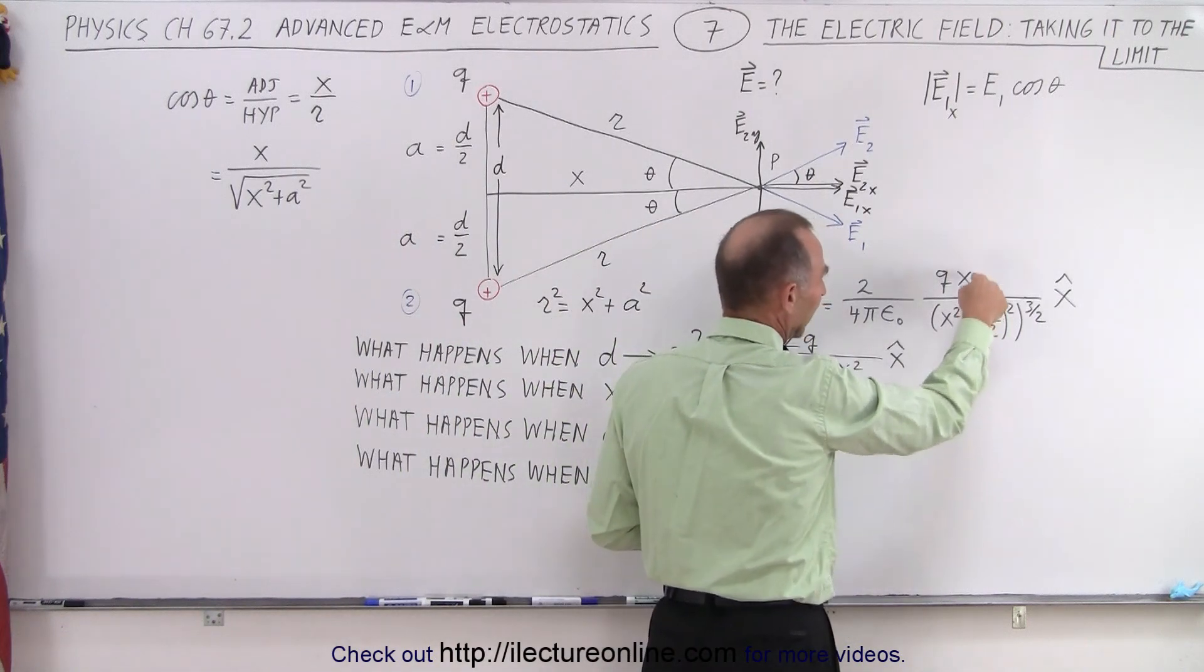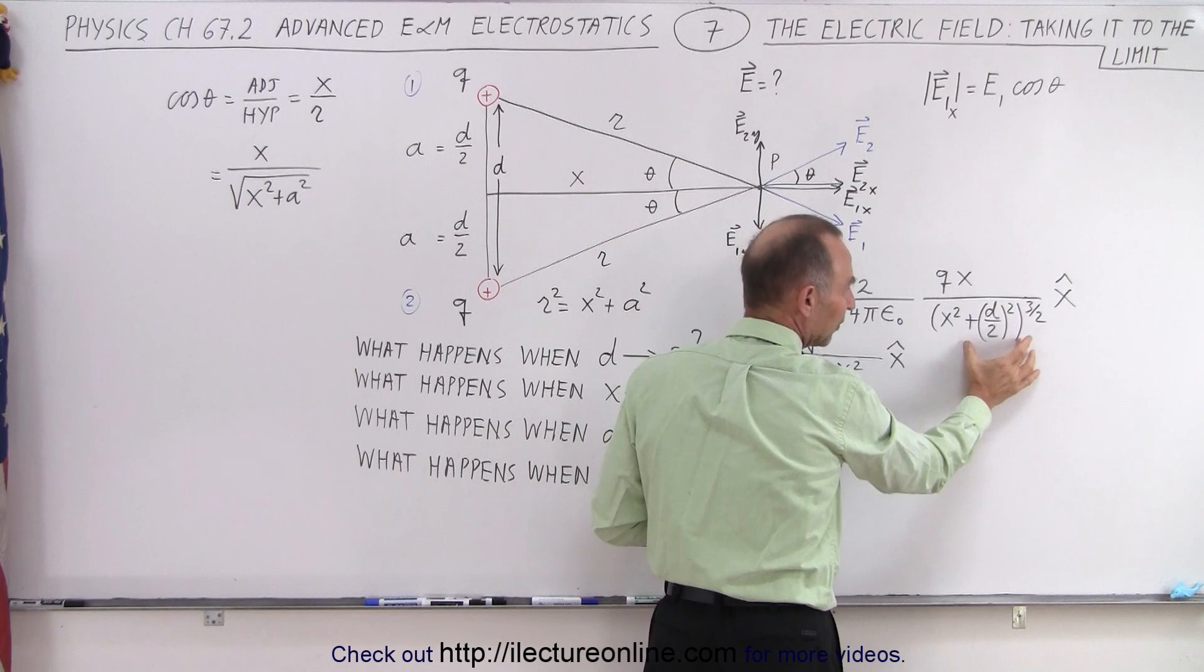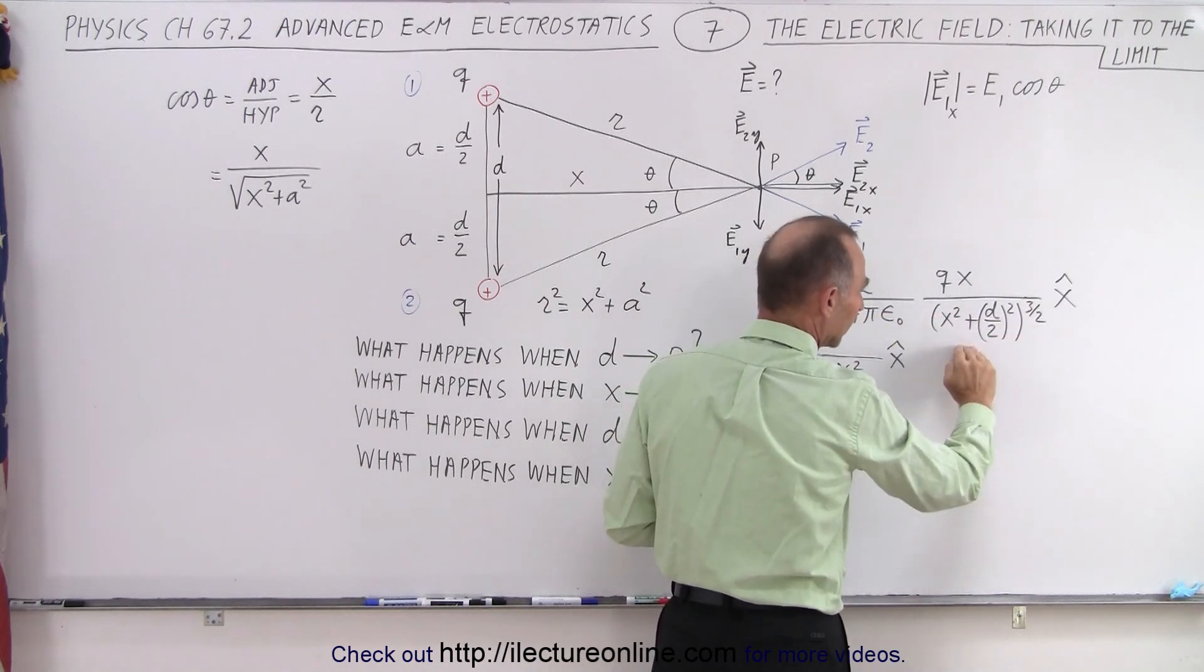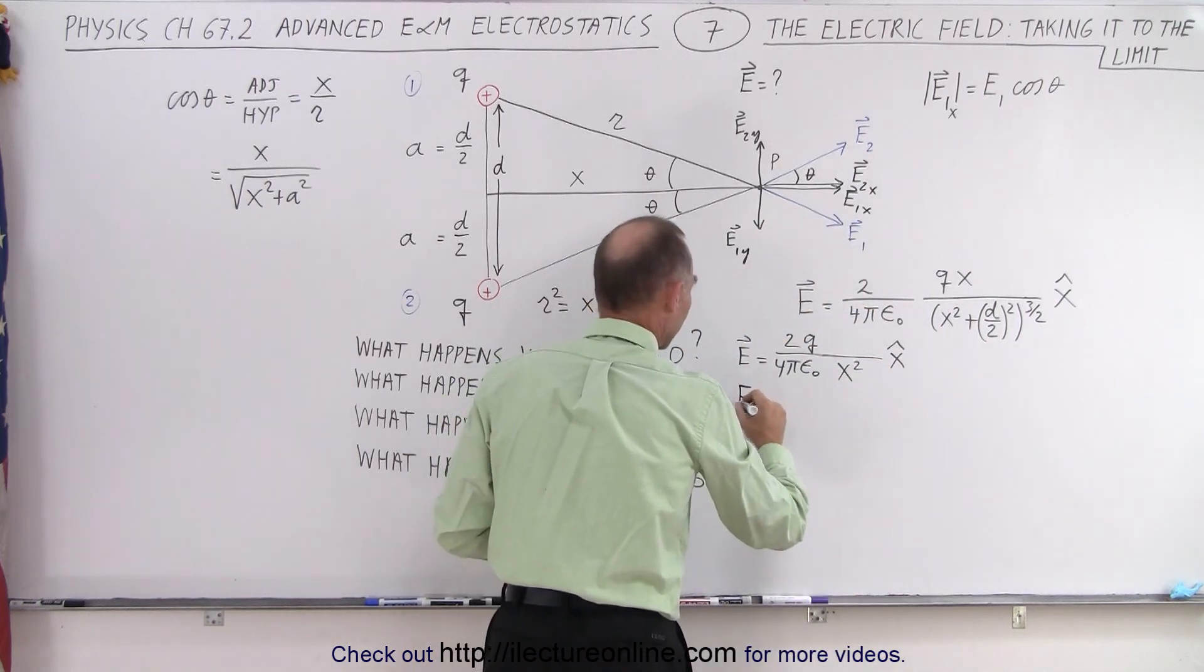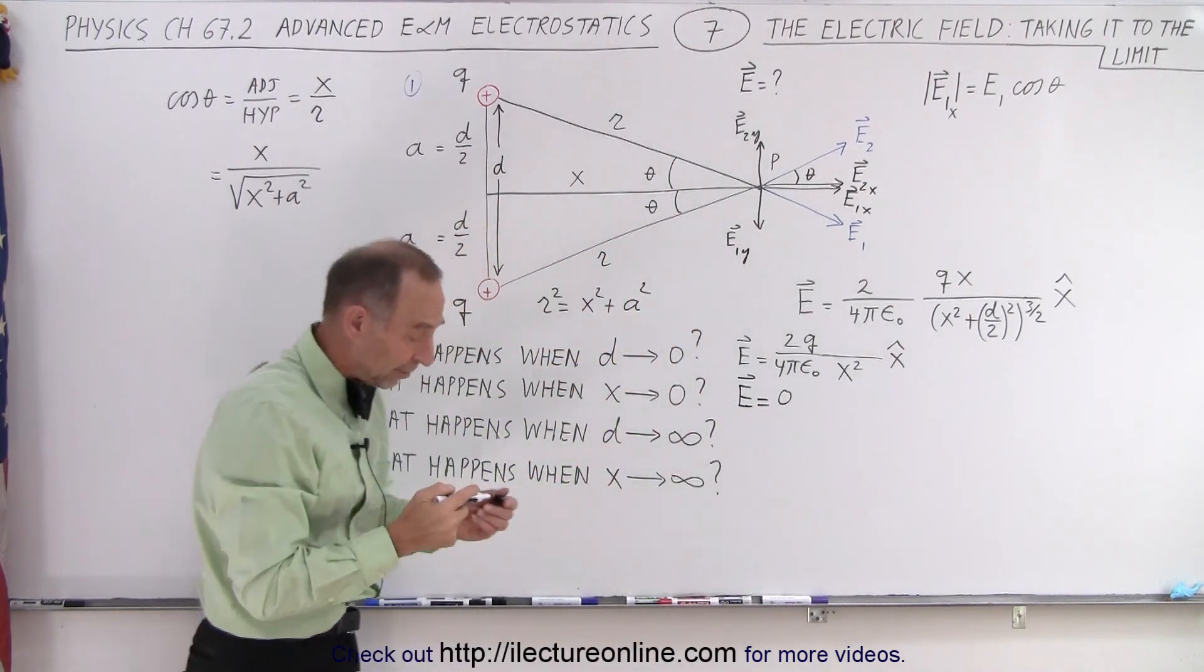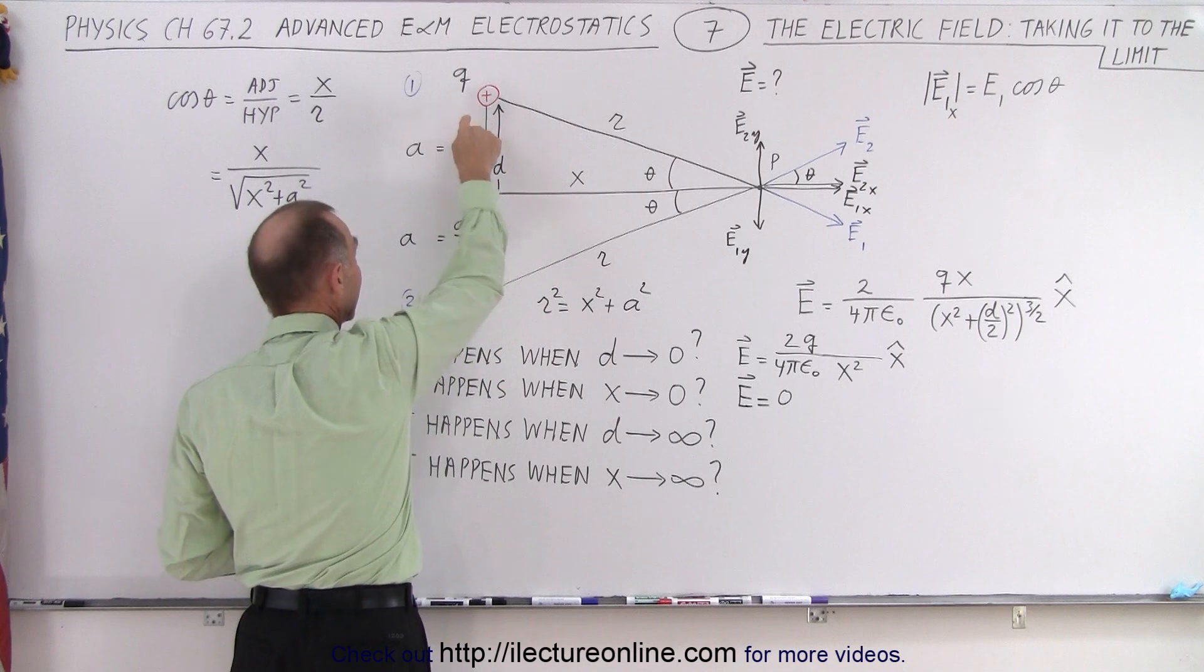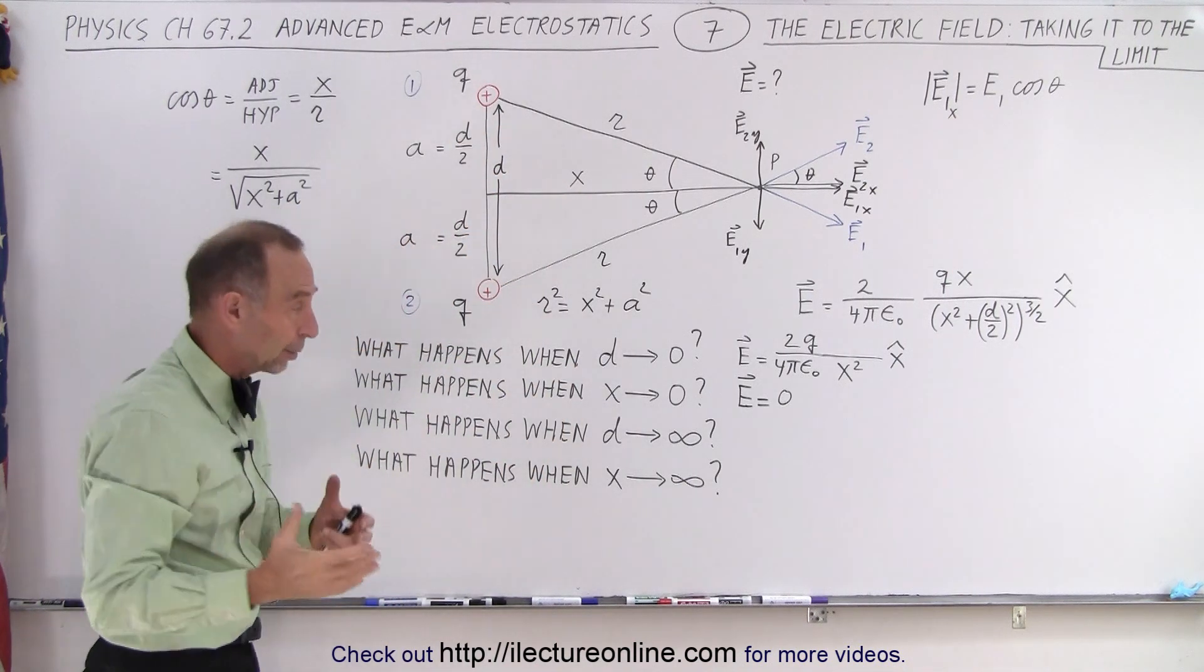Sure enough since we have an x in the numerator and we have an x² in the denominator, but we also have a d/2 squared which is not 0, so there's no 0 in the denominator. Then the numerator becomes 0 and the electric field simply is equal to 0. And that makes sense because when we're right in the middle here, the electric fields are equal in magnitude and opposite direction. So they should cancel each other out. So again that holds true.